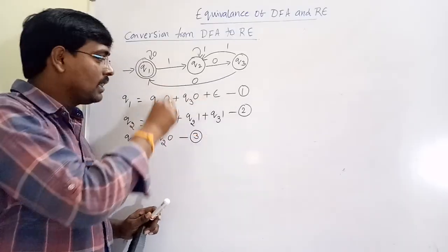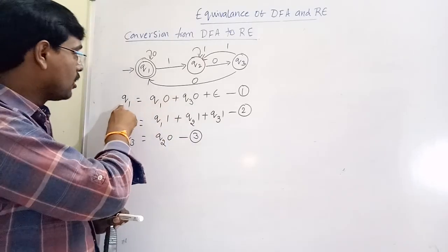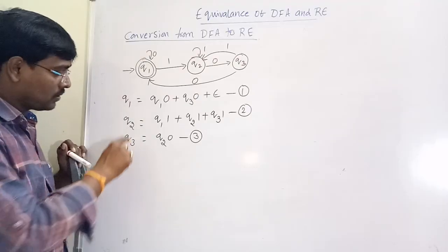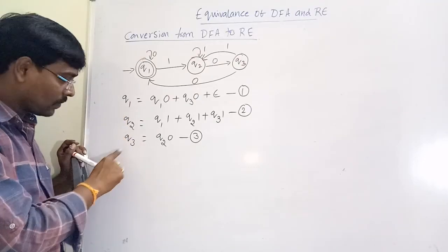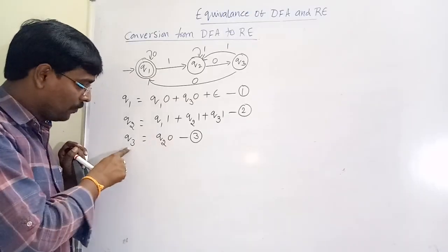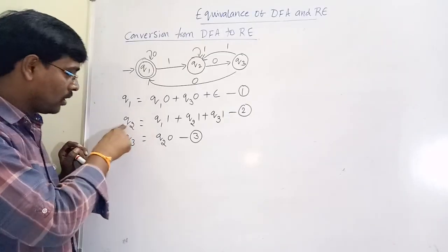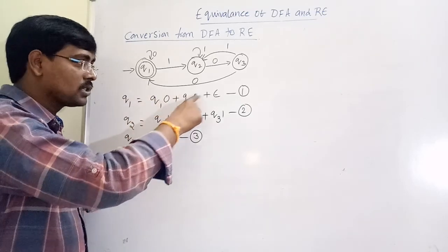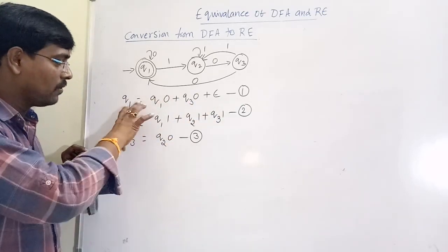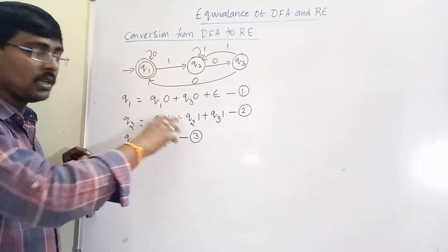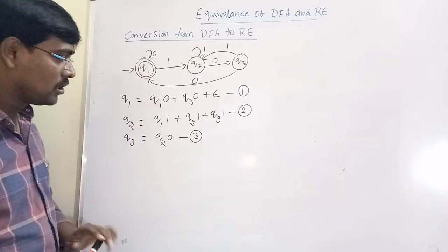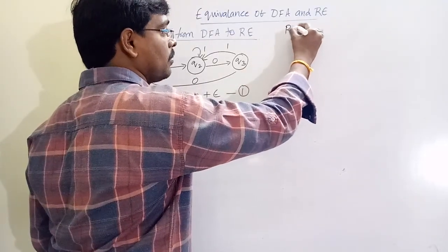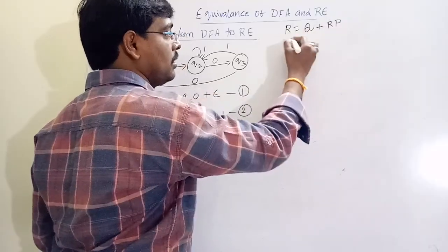Now solve the equations. Q3 = Q2·0. To solve this we need Q2. Q2 = Q1·1 + Q2·1 + Q3·1, and Q1 = Q1·0 + Q3·0 + ε. Everyone is a combination of other equations. To solve these, we will use Arden's theorem: if R = Q + R·P, then the answer is R = Q·P*.